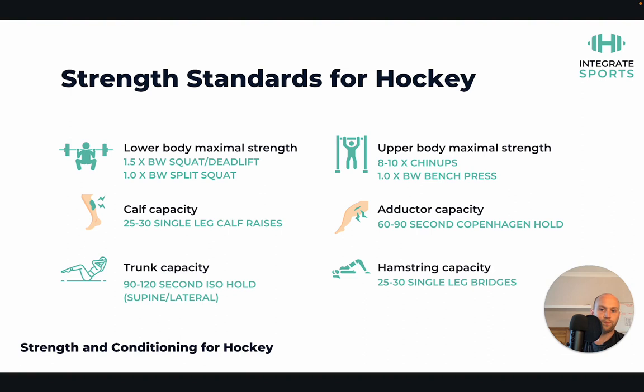In terms of capacity scores: 25 to 30 single-leg calf raises, 25 to 30 single-leg bridges for hamstring capacity, adductor capacity via a Copenhagen hold of around 60 to 90 seconds, and trunk capacity of around a 90 to 120 second isometric supine and lateral hold. If you had all of these attributes, you'd be in a solid position. More is better, but these give a ballpark to aim for.